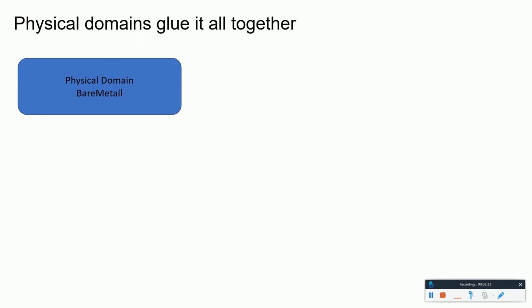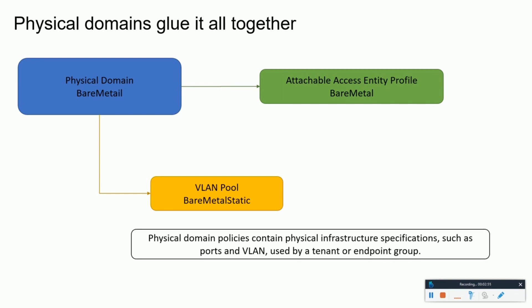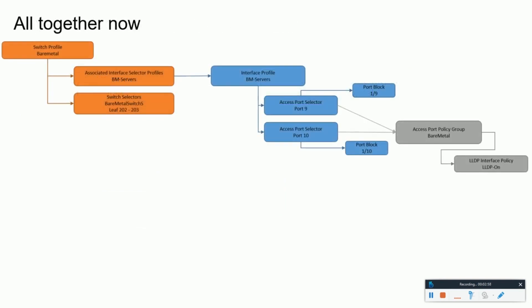We have a physical domain for the bare metal we are trying to connect to the fabric. That domain is mapped with the AEP — the Attachable Access Entity Profile — for that bare metal. Under the domain, the VLAN blocks are mentioned, which are allowed for that particular domain.